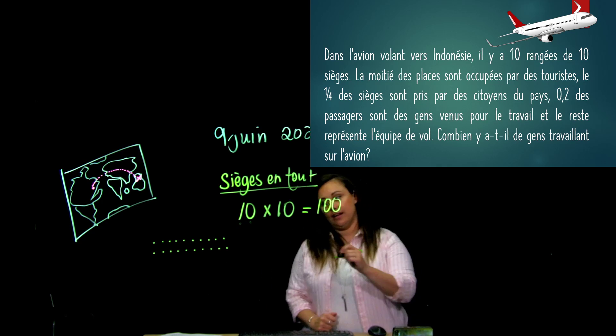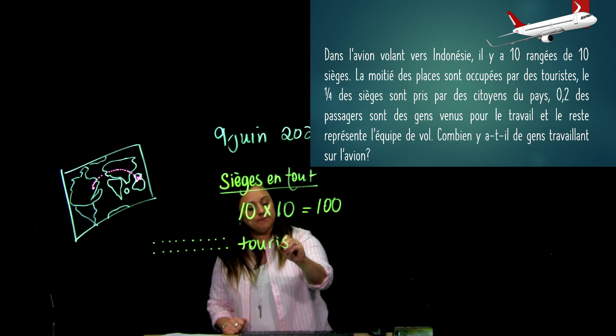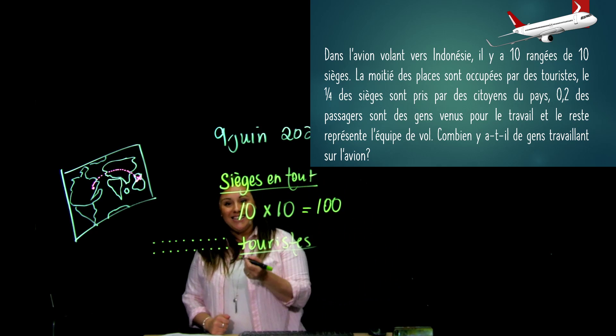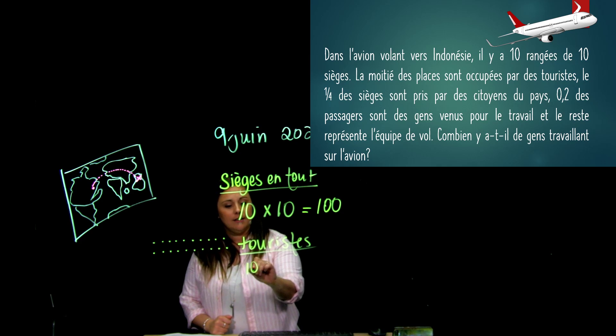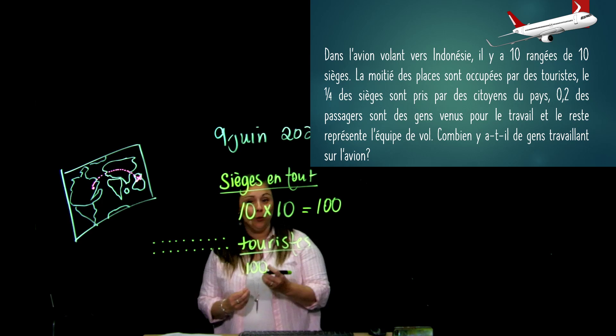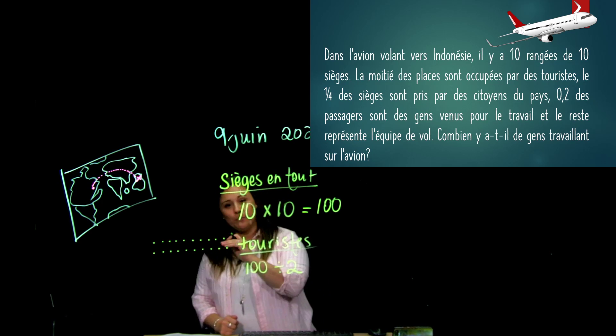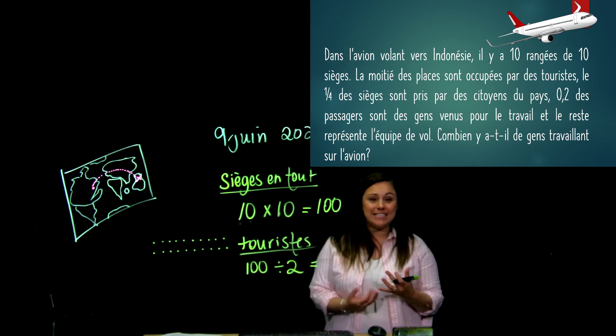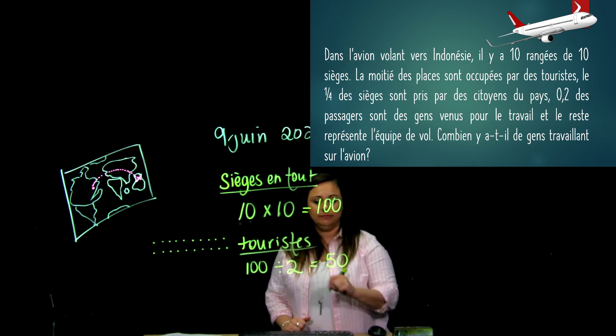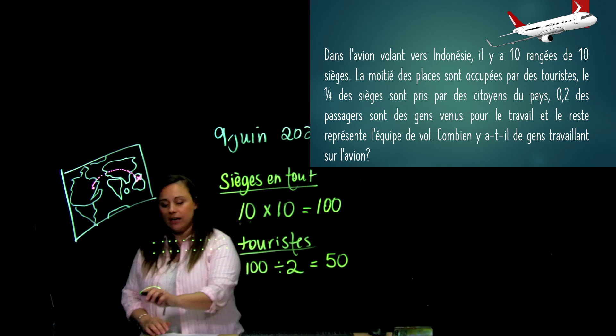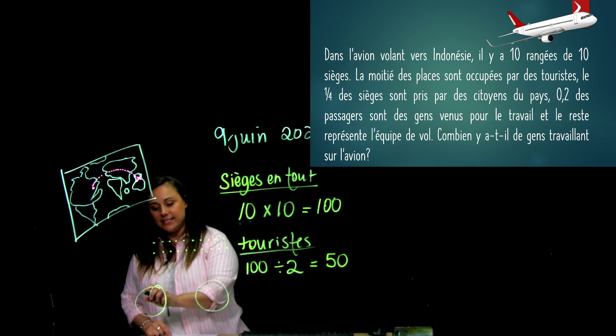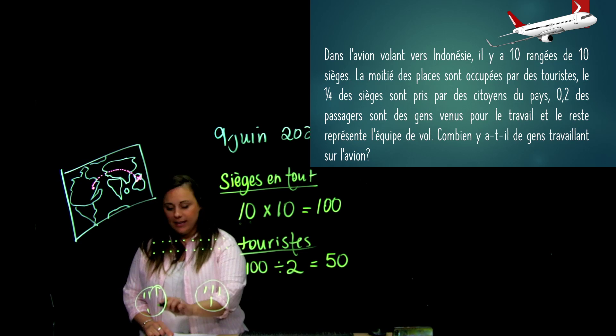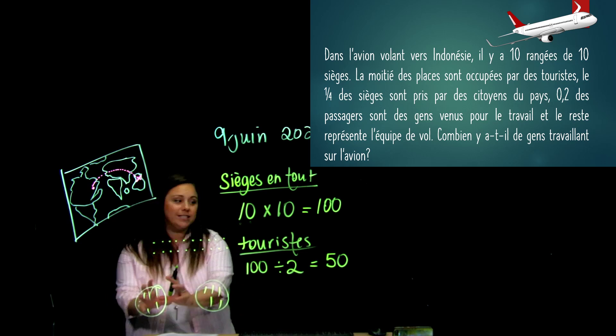Ensuite, on dit la moitié, c'est des touristes. Alors, je m'en vais écrire touriste. Des gens qui viennent en visite. Et j'en ai la moitié. C'est quoi ça, la moitié de 100? Alors, j'ai 100 et je veux diviser ça par 2. C'est ça, la moitié. Parce que ce que je ne t'ai pas dit, c'est qu'une fraction, c'est une division. Alors, qu'est-ce que ça fait? Je peux les dessiner. Sinon, je le sais que c'est 50. J'aurais pu faire deux paquets et aller porter mes dizaines. Je trouve que c'est donc 50.